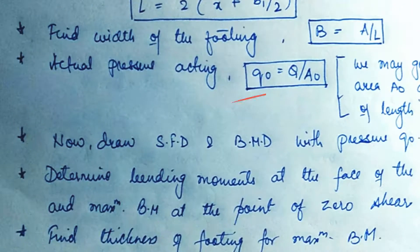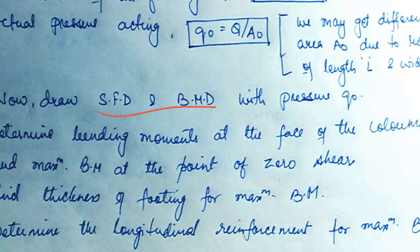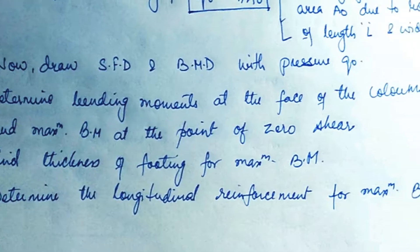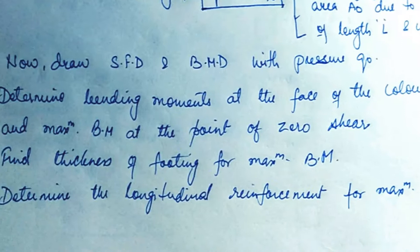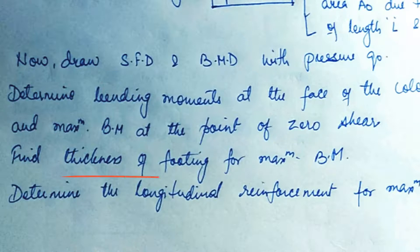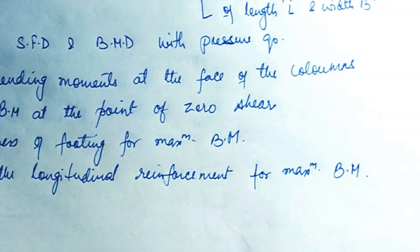With the actual pressure Q0, draw the shear force diagram (SFD) and bending moment diagram (BMD). Then determine the bending moment at the face of the columns and the maximum bending moment at the point of zero shear. The next step is to find the required thickness of the footing for the maximum bending moment and determine the longitudinal reinforcement accordingly.